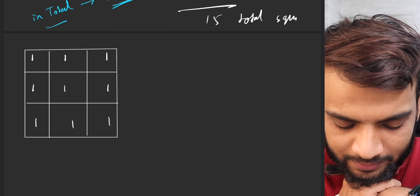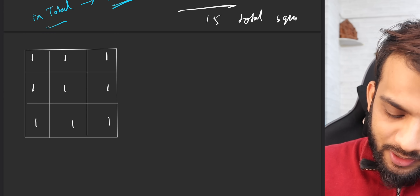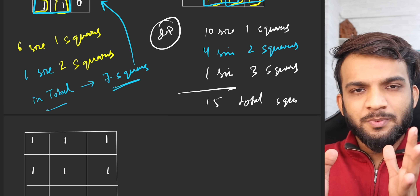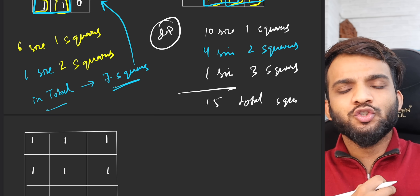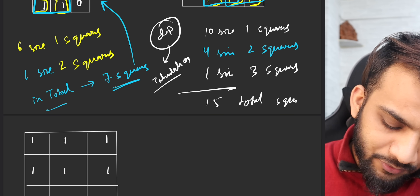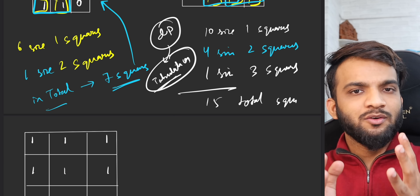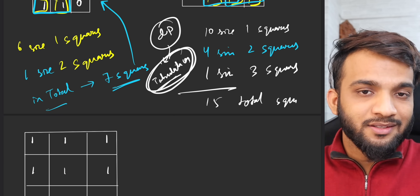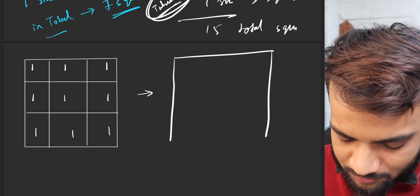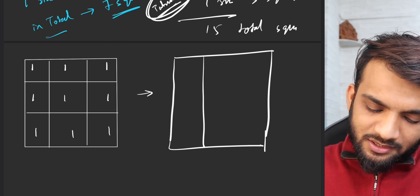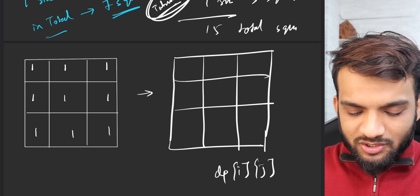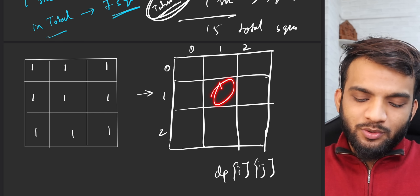Can we do better? Yes — this is where dynamic programming comes in. Unlike previous DP problems based on recursion, for square problems we tend to write the tabulation directly, as it is much more intuitive. What we do is create a DP array of the same size as the input matrix — so dp[i][j] represents some quantity we'll define.